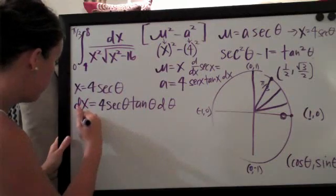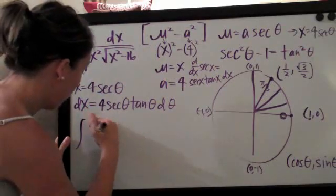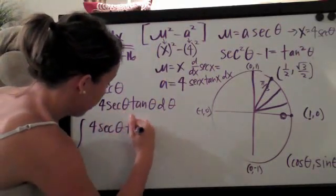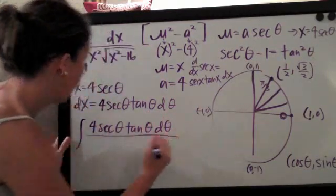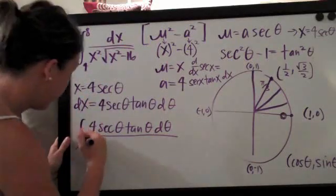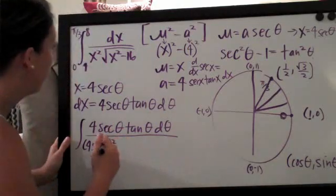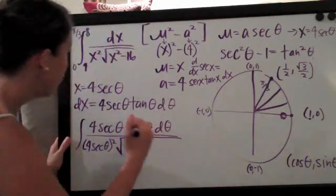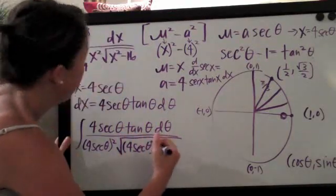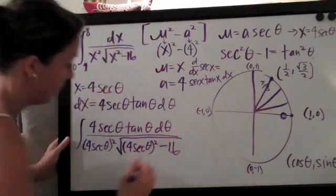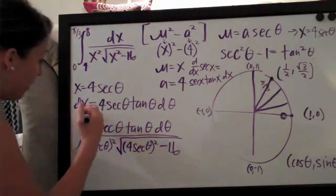So let's go ahead and do that. The integral will be, now this time, we're going to plug in for dx here. It'll be four secant theta tangent theta d theta over, we've got an x squared here. So our x is four secant theta squared, and then we have the square root and another x squared. So four secant theta squared and then just minus sixteen. Okay so we went ahead and plugged everything in there.